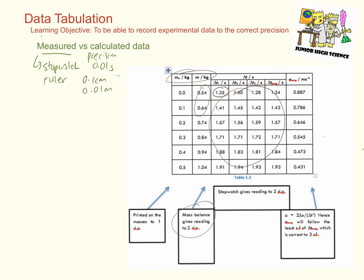Now let's move on to calculated data. In the table, acceleration is an example of calculated data. Acceleration is calculated from two measurements: displacement and the time interval.